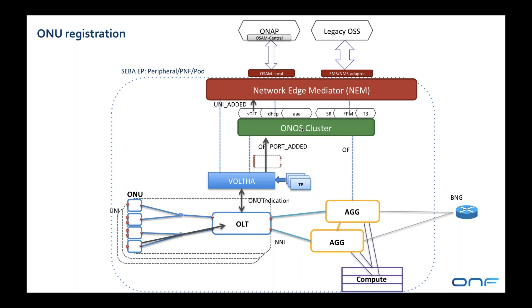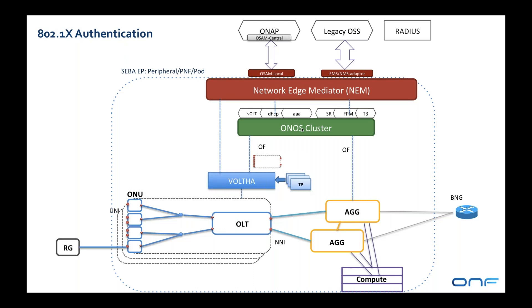The next workflow is authentication using 802.1x, which authenticates the residential gateway behind the ONU. The residential gateway will be plugged into the ONU inside the residence and will send EAPOL packets into the network to begin authenticating. Those packets are forwarded from the ONU to the OLT, where they're trapped and sent up to Volta, then sent up to ONOS as OpenFlow packet-in messages, where they arrive at the AAA application in ONOS.